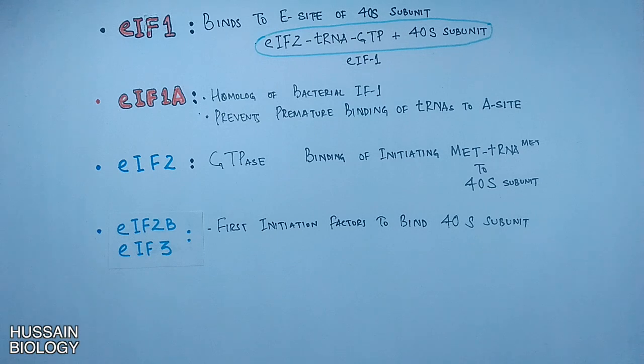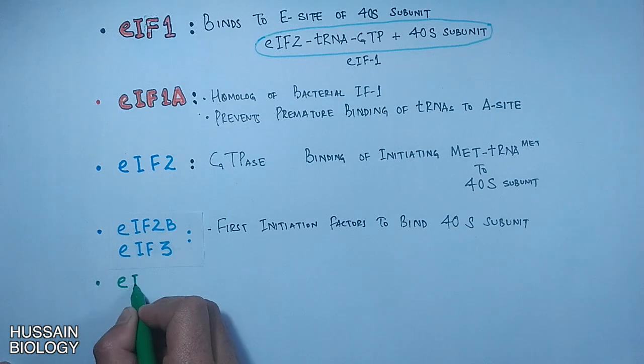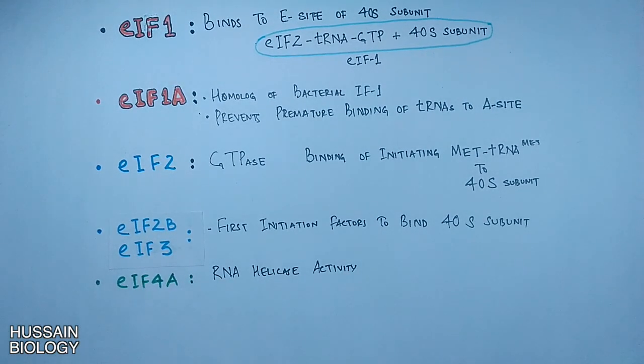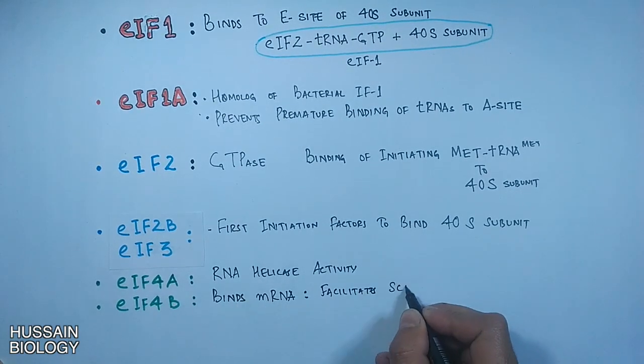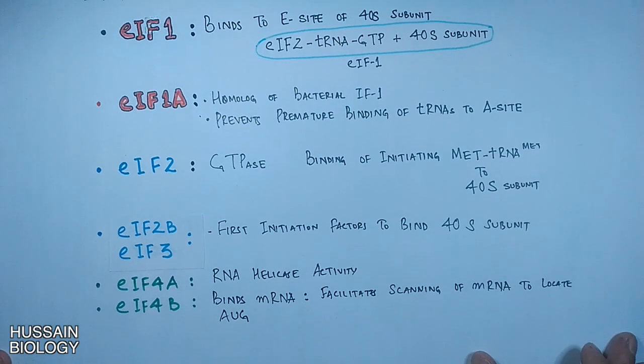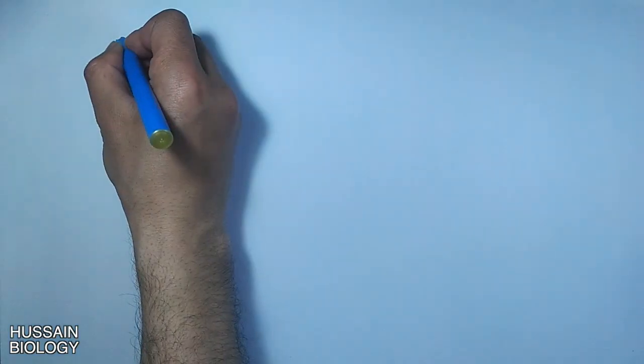Then we have EIF4a which has RNA helicase activity. Then there is EIF4b, this factor binds mRNA and scans it for AUG codon, that means it locates the AUG codon.